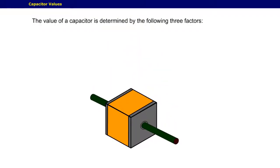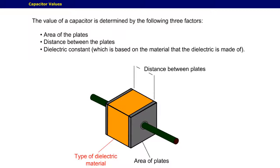The value of a capacitor is determined by the following three factors: area of the plates, distance between the plates, and dielectric constant, which is based on the material that the dielectric is made of.